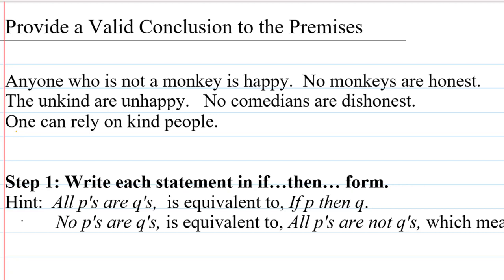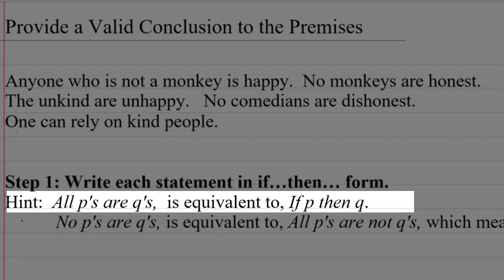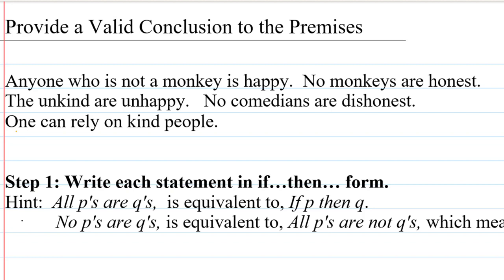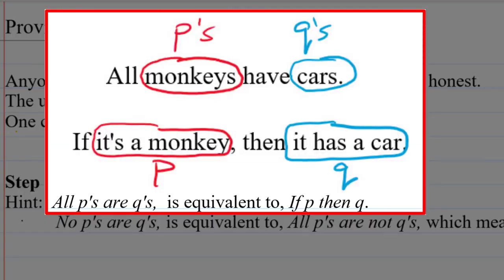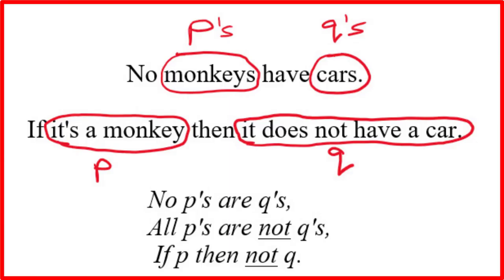The first step is to write each statement in if-then form. If you have a statement of the form 'all P's are Q's,' that's equivalent to 'if P then Q.' For example, if I say all monkeys have cars, that's equivalent to saying if it's a monkey, then it has a car. And because 'no P's are Q's' is the same as saying 'all P's are not Q's,' we can translate that into 'if P then not Q.'